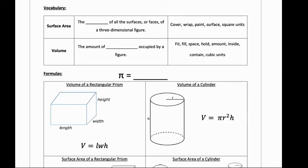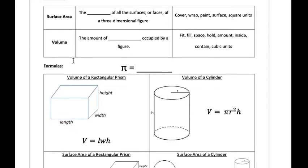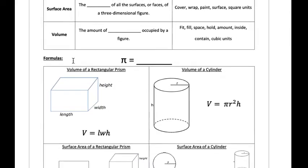This video is going to focus on volume and surface area of rectangular prisms. The first thing we need to start with is some basic vocabulary. The surface area of a shape is the sum of all the surfaces of a three-dimensional figure, and some key words that help us identify that a problem is asking for surface area are: cover, wrap, paint, surface, or square units.